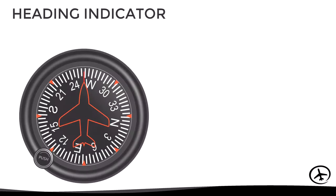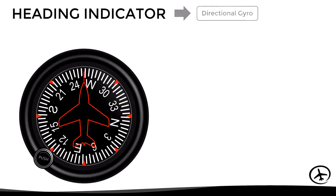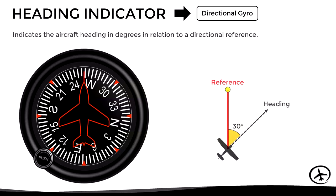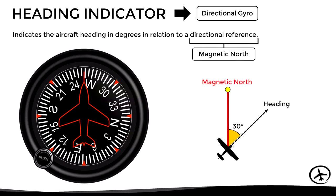The heading indicator, also known as the directional gyro, indicates the current heading of the aircraft in degrees in relation to a directional reference. Usually the directional reference used in aviation is the magnetic north pole.